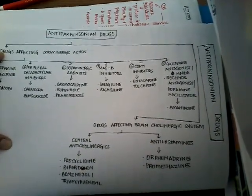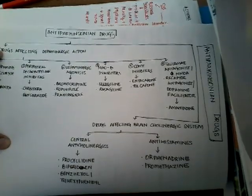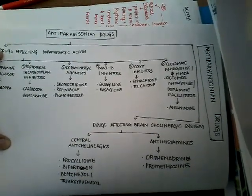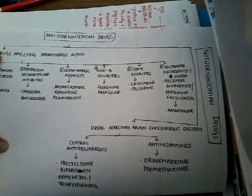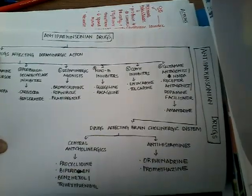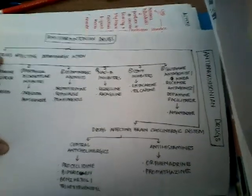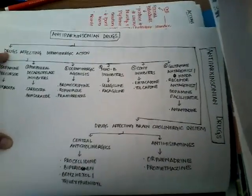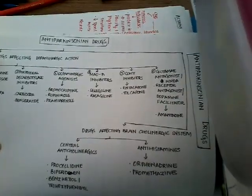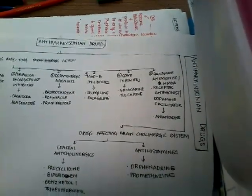The next group of drugs is dopaminergic agonists, which include bromocriptine, ropinirole, and pramipexole. These dopaminergic agonists activate the D1, D2, and D3 receptors of dopamine, thus increasing dopamine availability in the brain.